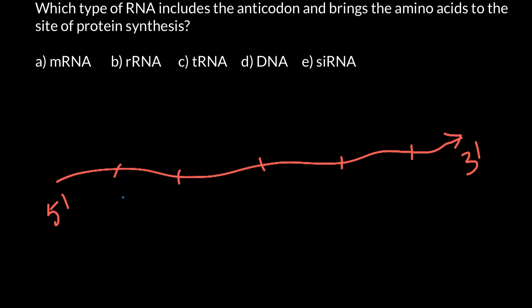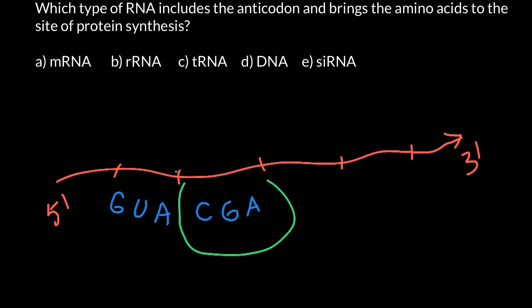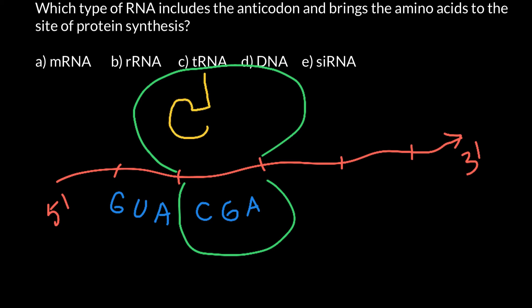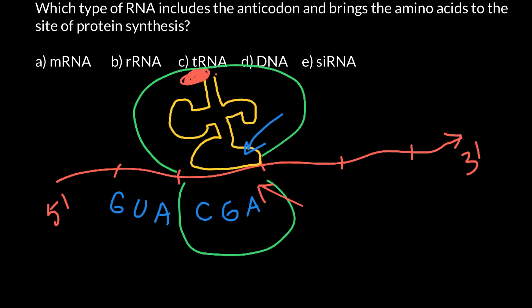In messenger RNA, thymine is substituted with uracil. We also have a small ribosomal subunit and a large ribosomal subunit. We need the RNA molecule called tRNA, which brings an amino acid to the ribosome. The tRNA has an attached amino acid, and if the messenger RNA has a codon, the tRNA has a corresponding anticodon. So if the codon is cytosine-guanine-adenine, the anticodon would pair as guanine with cytosine, cytosine with guanine, and adenine with uracil.